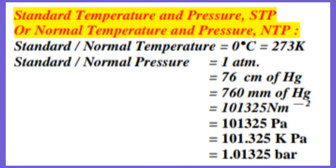Standard temperature and pressure, in short STP, is also known as normal temperature and pressure, in short NTP. Standard or normal temperature is 0 degree Celsius, which is equivalent to 273 Kelvin. Standard or normal pressure is 1 atmosphere, which is equivalent to 76 cm of mercury column or 760 mm of mercury column, which is equivalent to 101325 Newton per meter squared — the SI unit of standard or normal pressure.